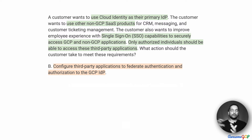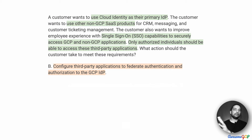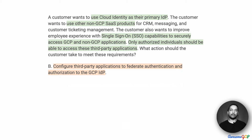Option B suggests: configure third-party applications to federate authentication and authorization to the GCP IDP. In this case, we are not submitting licenses anywhere to the identity provider or the third-party application. The licensing, whatever account you have over there, still remains part of that service provider. All you are going to do is federate the authentication — authentication happens in your IDP and that gets passed on to the third-party application.